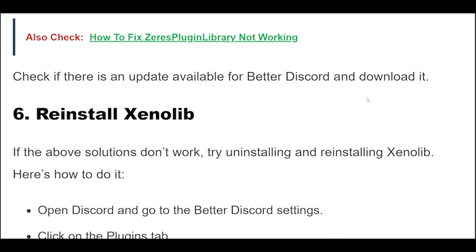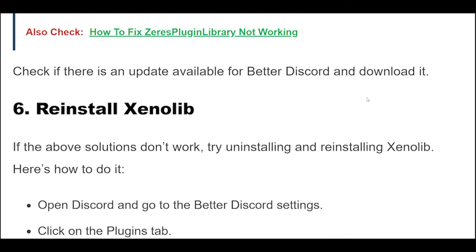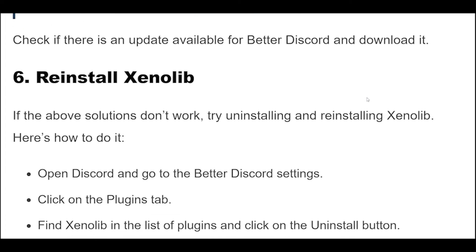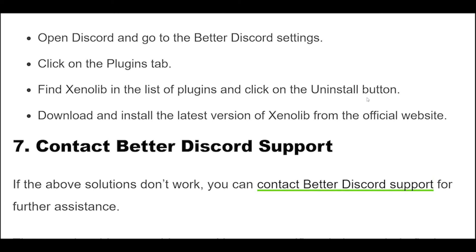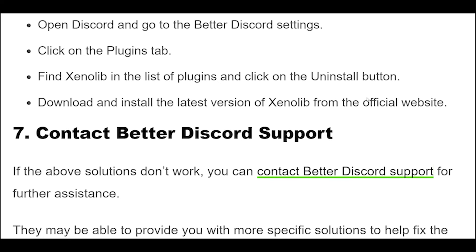If the above solutions don't work, try uninstalling and reinstalling Xenolib. Open Discord and go to the BetterDiscord settings. Click on the Plugins tab. Find Xenolib in the list of plugins and click on the Uninstall button. Download and install the latest version of Xenolib from the official website.